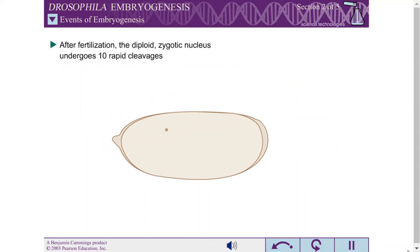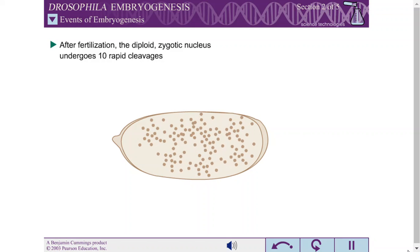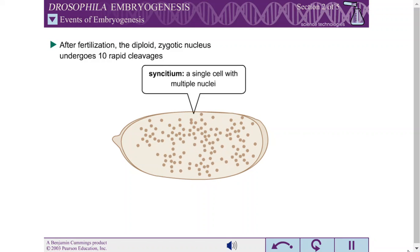After the haploid sperm and egg nuclei fuse, the resulting diploid zygotic nucleus undergoes a series of 10 rapid cleavages within the central yolk regions of the egg. The embryo is called a syncytium at this point because it is a single cell with multiple nuclei.